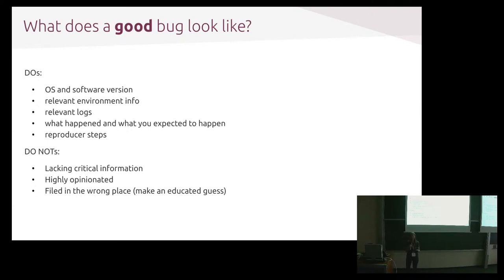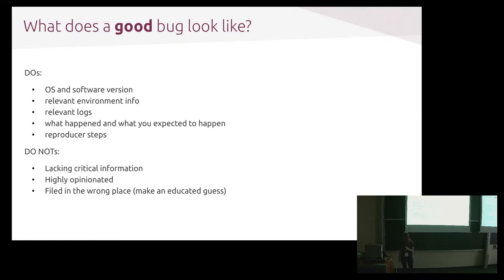Do not file a bug marked critical that just says 'it doesn't work' — that's the worst. Also avoid being super highly opinionated. People will file bugs saying this is the worst issue in the world and it needs to be fixed now. Recognize that developers are people with their own roadmap and priorities. So try to be cut and dry: here are the facts, here's what happened — not 'oh, it's the end of the world.' Also try to file it in the right place. At Canonical we have Launchpad and GitHub. Do your best, but if it goes in the wrong place, the right person will probably see it and forward it.